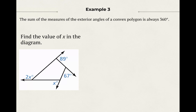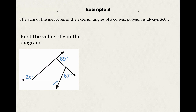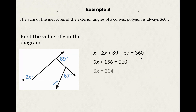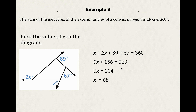Here's an example using the exterior angle theorem. The sum of the measures of the exterior angles of a convex polygon is always 360 degrees — it doesn't matter if it's a pentagon, heptagon, octagon, nonagon, or dodecagon, they always add up to 360 degrees. Pause the video and figure out what x equals. You just add up all four exterior angles to equal 360, combine like terms, subtract 156, divide both sides by three — x equals 68. We answered the question, so box your answer and done.